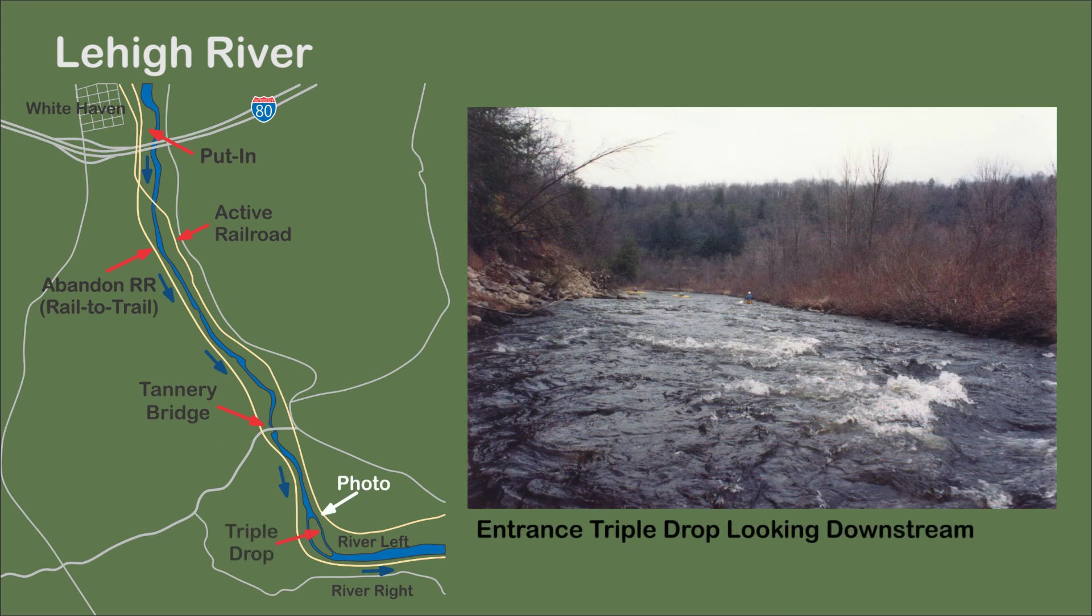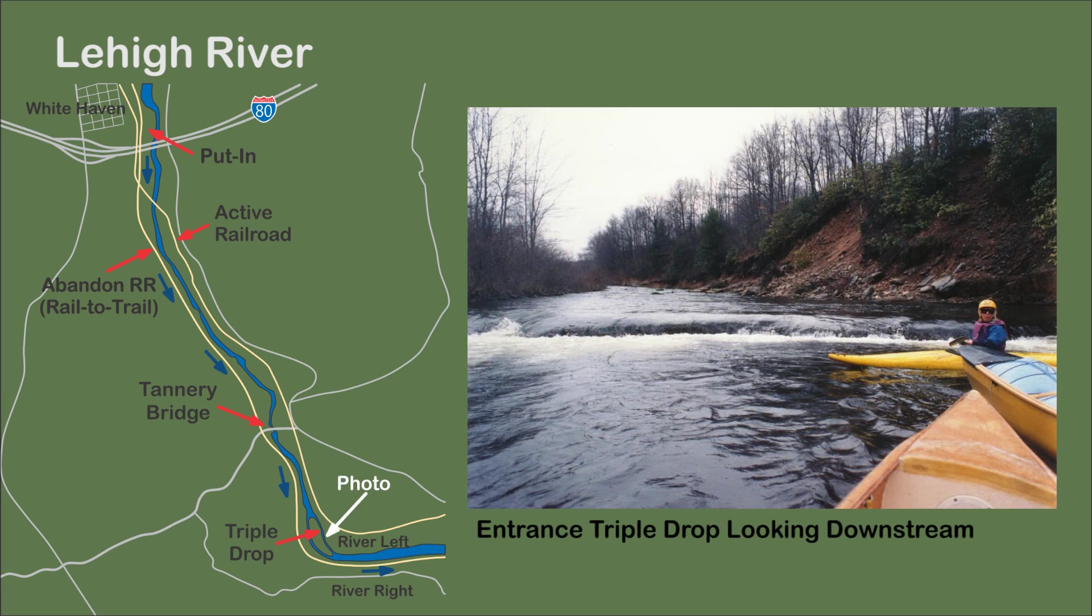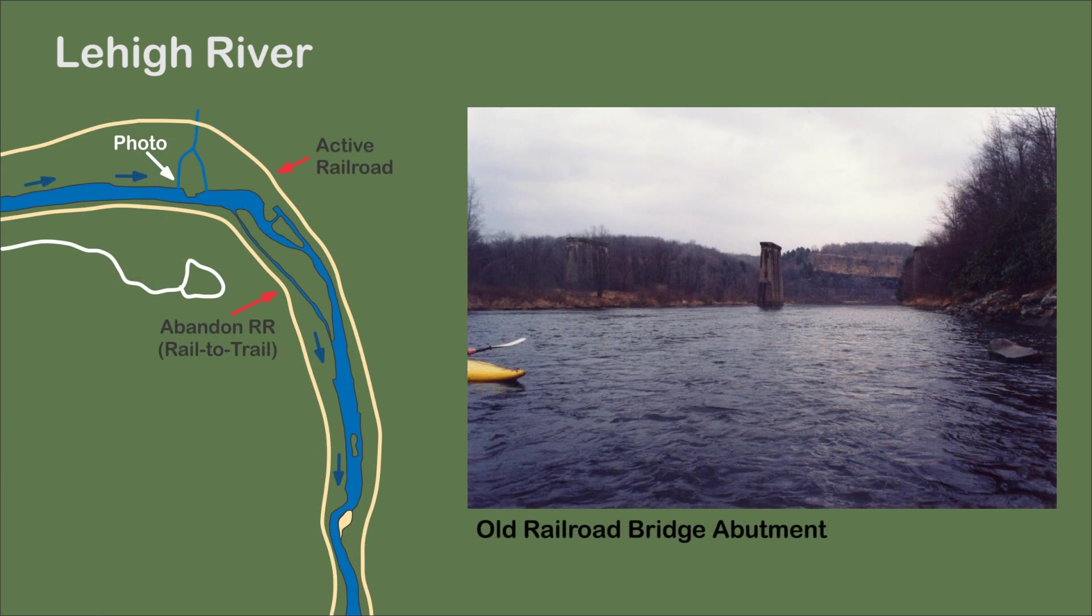Moving downriver is Triple Drop, on river left of Maple Island. Further down the channel is a ledge with a nearly river-wide hydraulic. Around the bend, some flat water, past the bridge piers, and toward the entrance of Z Rapids.